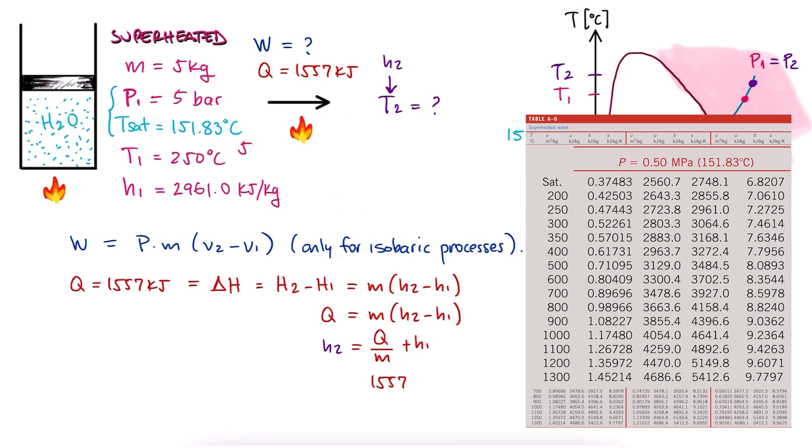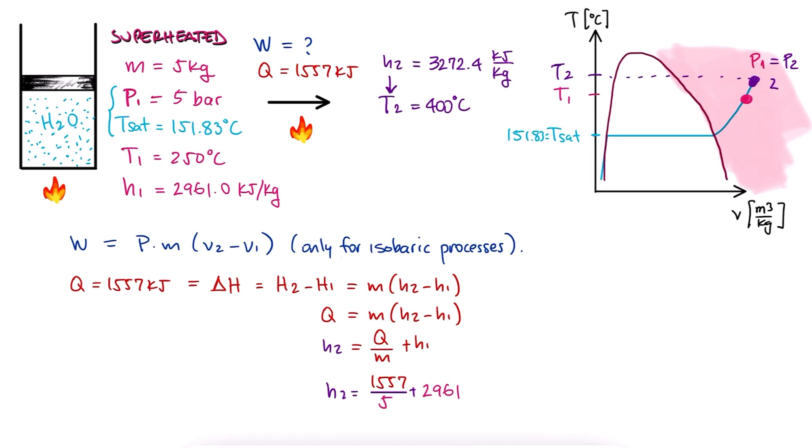This yields a value of 3272.4 for H2. By looking up the same table, since the pressure is constant in this process, we see that the temperature that corresponds to a specific enthalpy with that value is 400 degrees Celsius. This is T2.